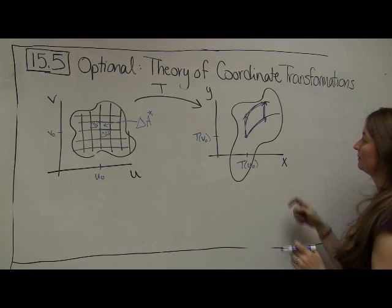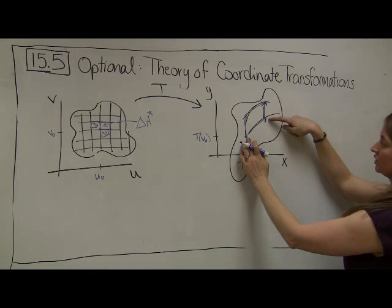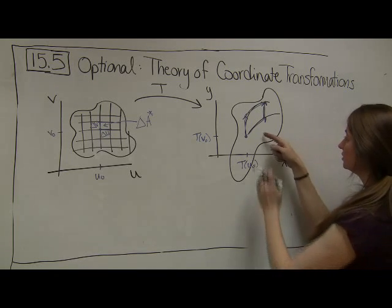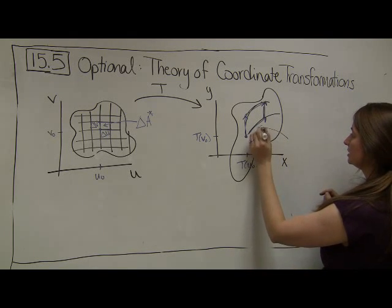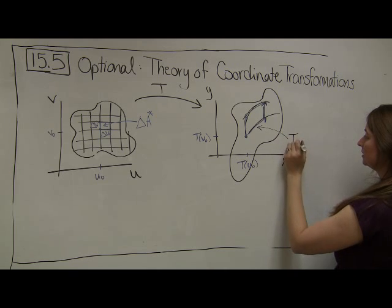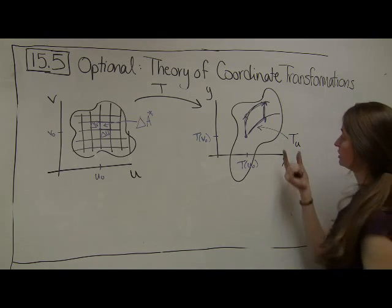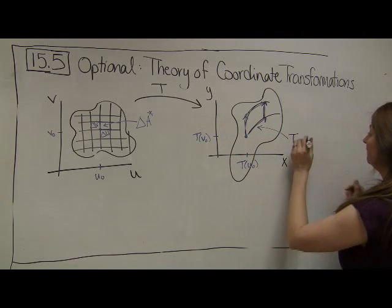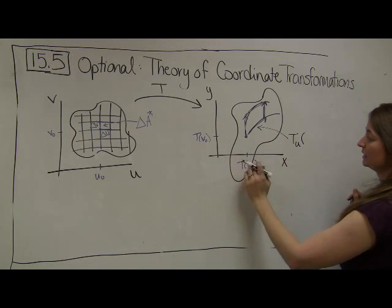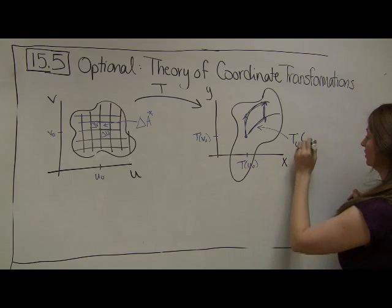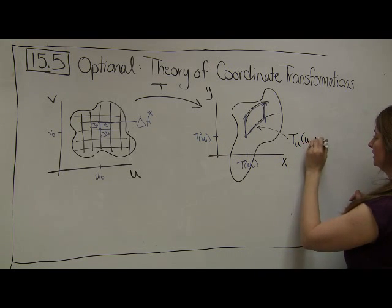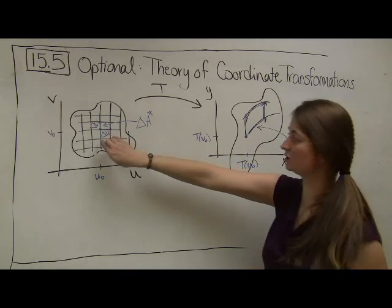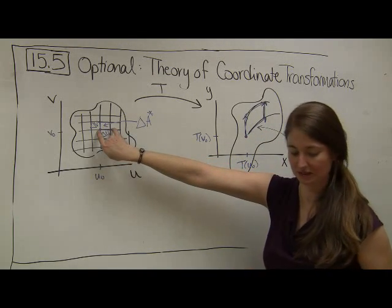What is this parallelogram? The direction vector here — and maybe this is a little more vector theory than we have covered in this class — is going to be given by the partial derivative with respect to U of this transformation function, evaluated at the point U-naught, V-naught. That's the direction of the vector, but it's going to have magnitude delta U, because that was the original length.